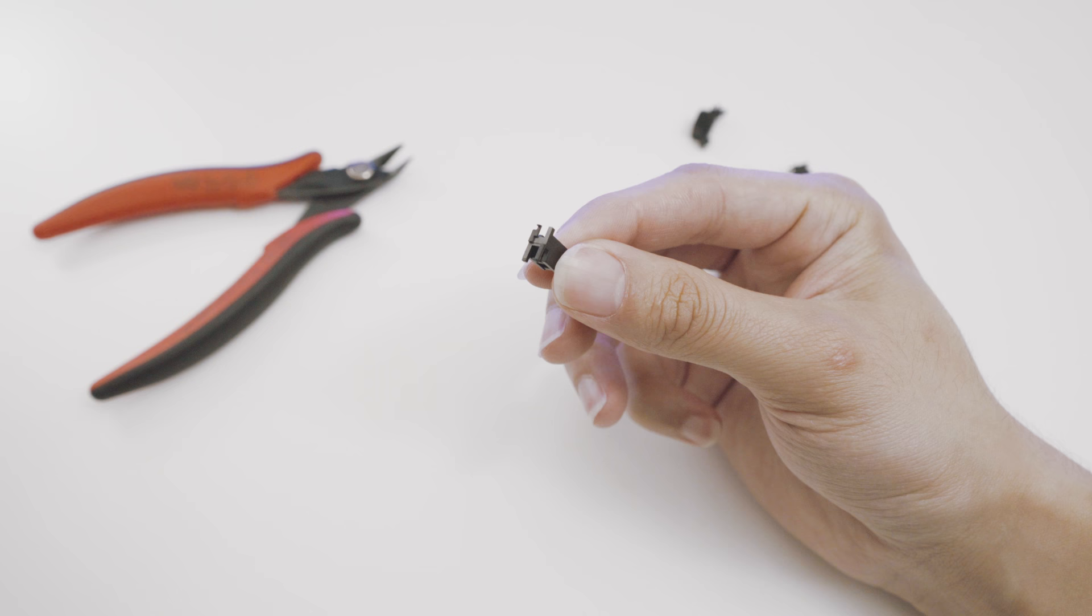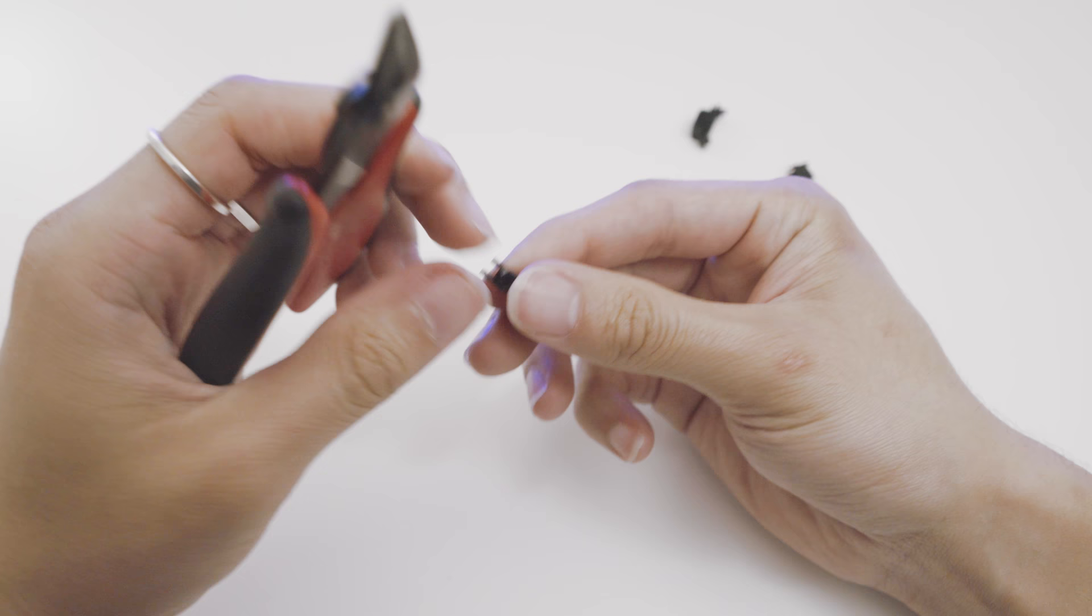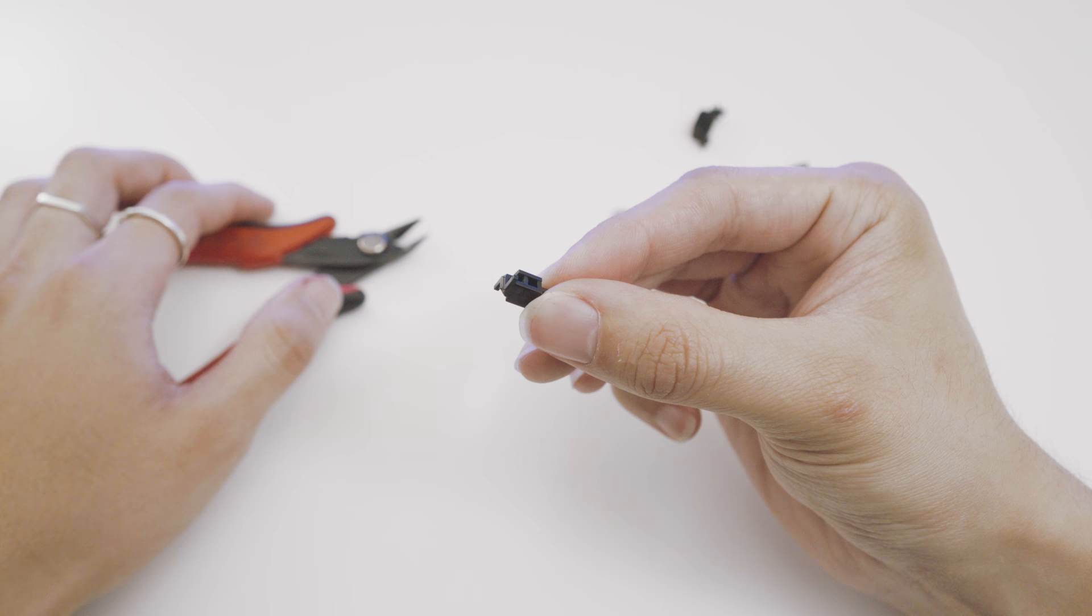Next, take one of the stems. Notice that two of the four legs have those fangs mentioned earlier. Grab your wire cutter and clip those legs off. That's it. That's how you clip your stabilizers. Do the same for the other one.